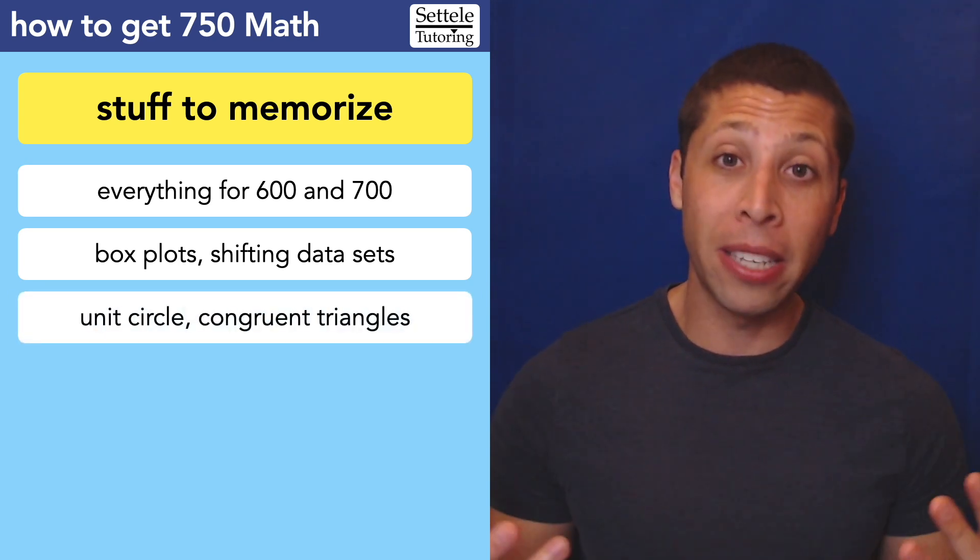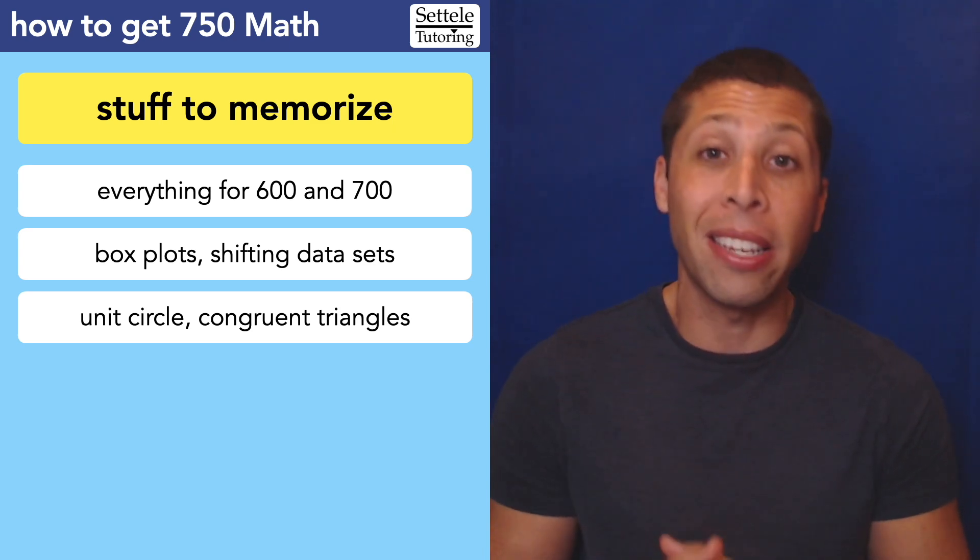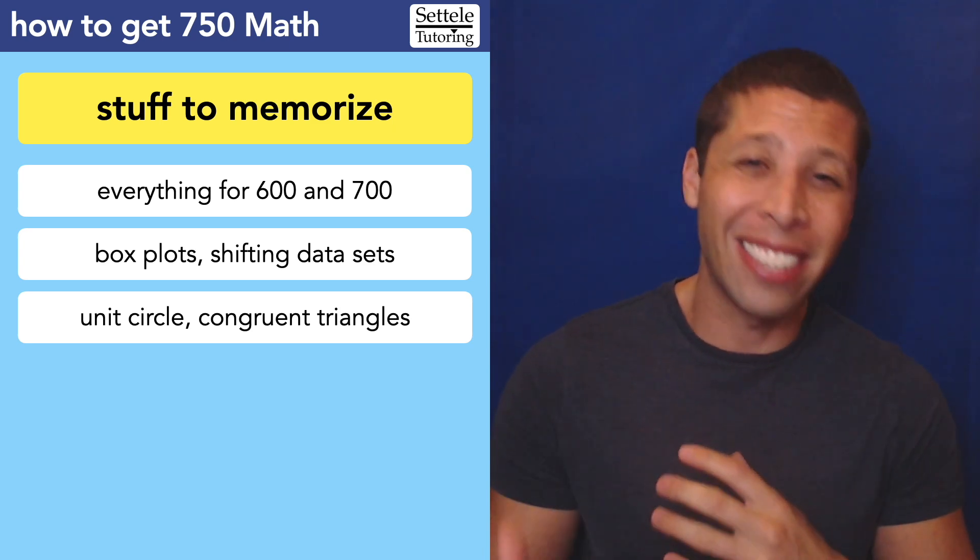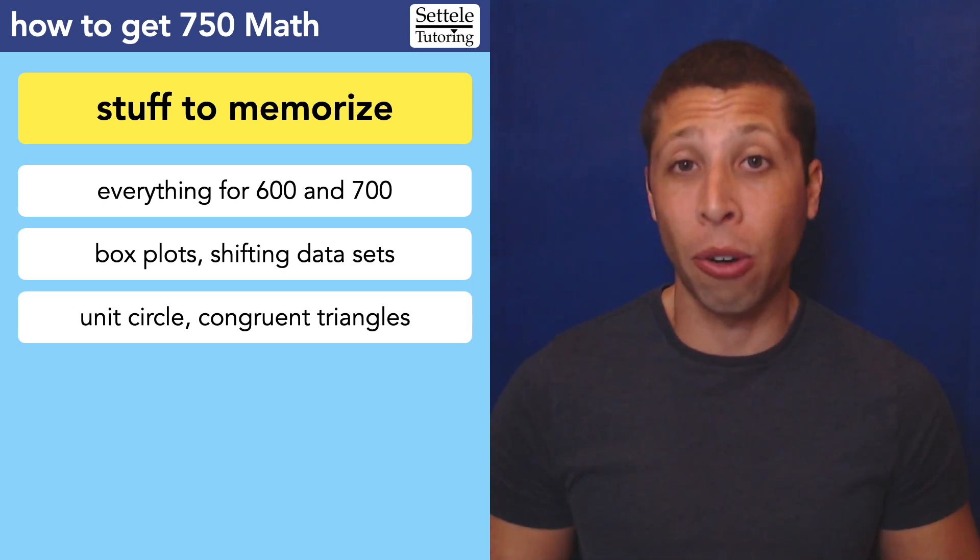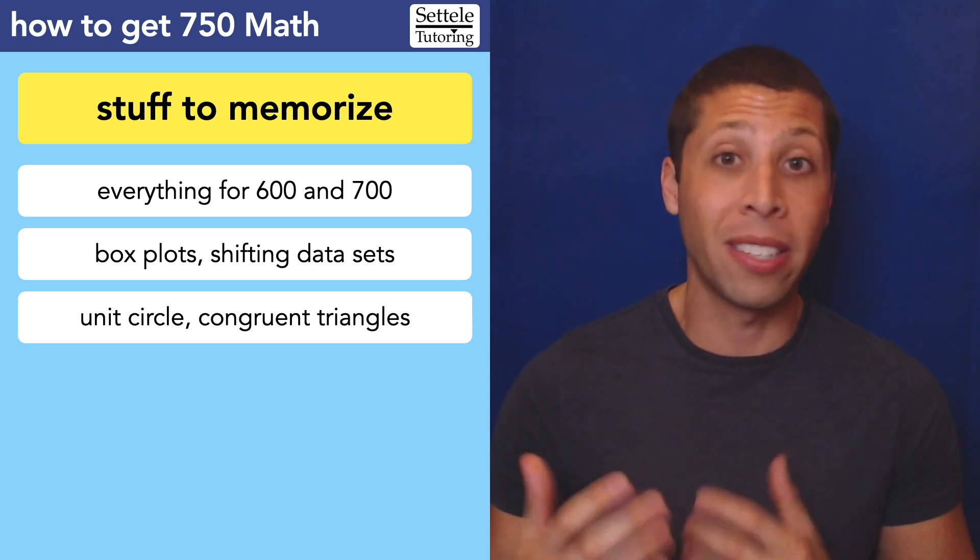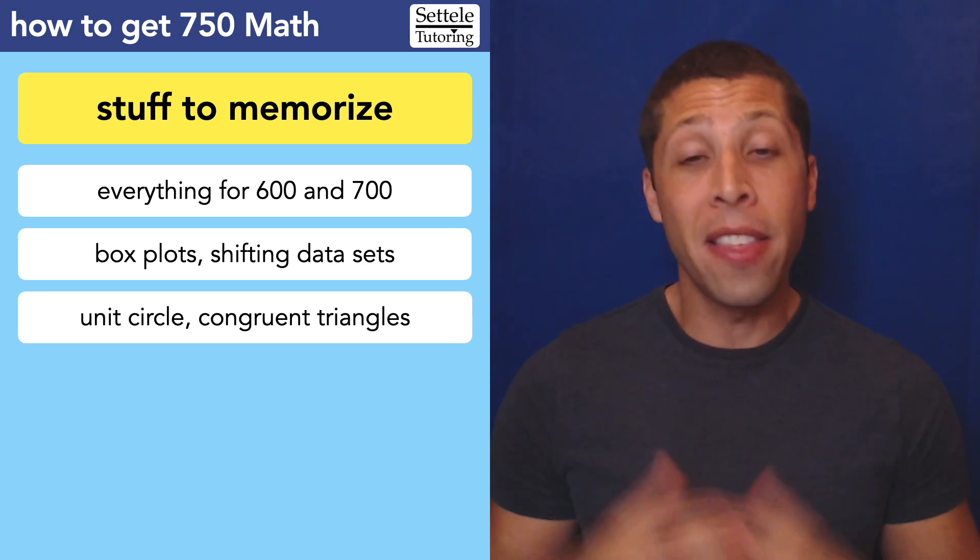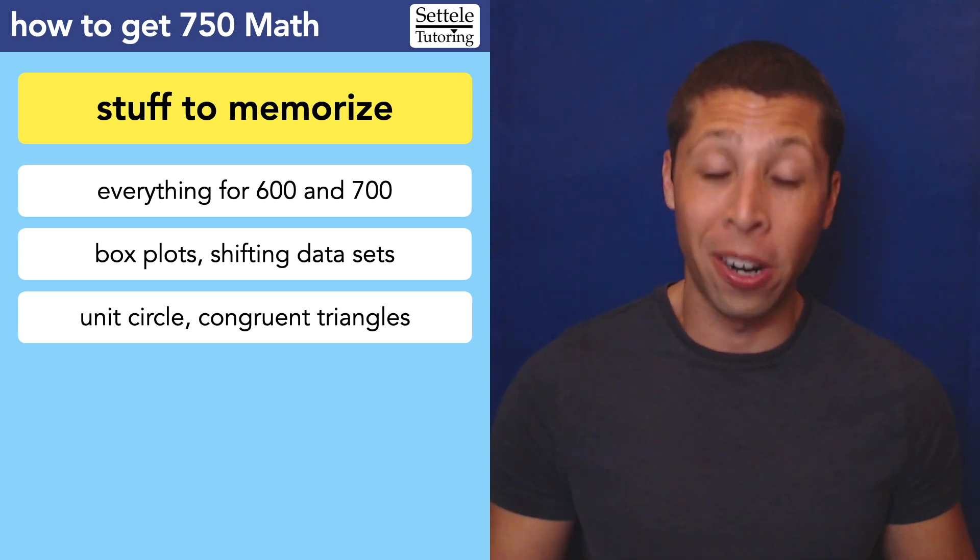You also in geometry need to focus on some of the more obscure things that really don't come up very often. Things like the unit circle, which is usually about 30, 60, 90 triangles, and then congruent triangles, the reasons that we can prove those correct. Again, these are things that come up maybe once every 10 SATs, but if you're looking for that 750 or better, then no topic is too obscure for you to spend a little bit of time memorizing important information.